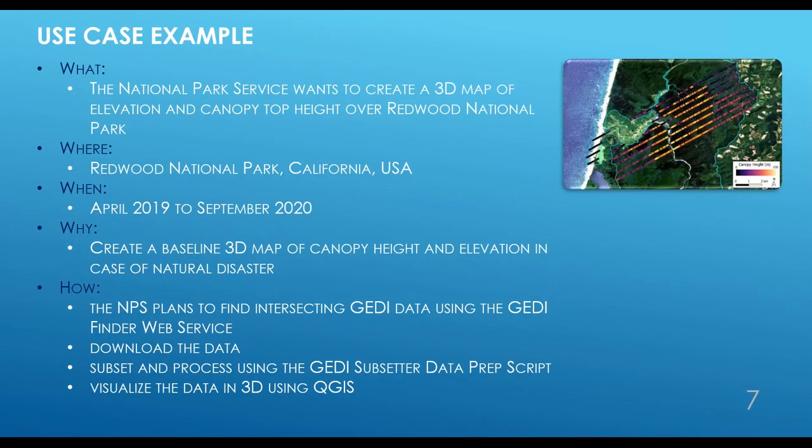For today, we're going to pretend that we work for the National Park Service in Redwood National Park in Northern California. The National Park Service is looking to use GEDI to create a 3D map of elevation and canopy top height over the park using 18 months of version 1 data. This baseline 3D map could be useful in case of a natural disaster such as a forest fire, flooding, or landslide—to know what the forest and landscape looked like before and after. The NPS plans to find intersecting GEDI data using GEDI Finder, download the data, subset using the GEDI subsetter script, and visualize in 3D using QGIS.